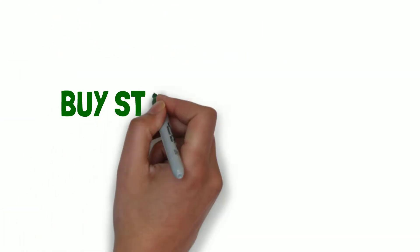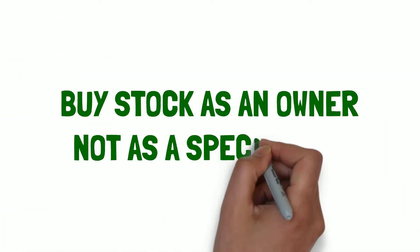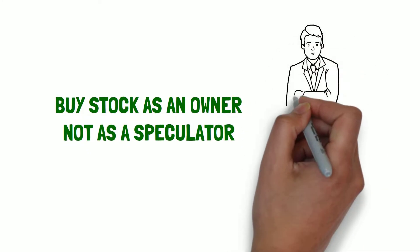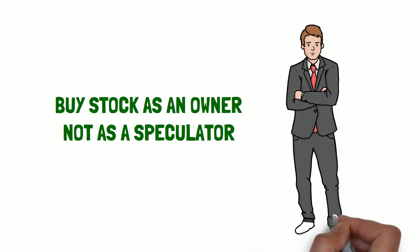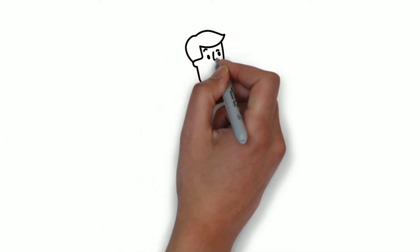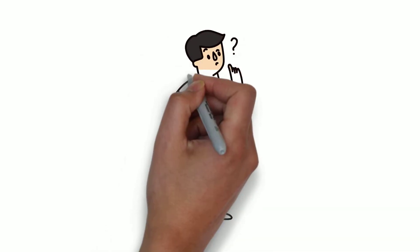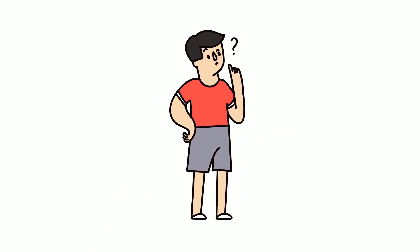The first lesson is to buy stock as an owner, not as a speculator. For Warren Buffett, owning a stock is an ownership interest in an actual business. Warren Buffett once said, whenever Charlie and I buy common stocks for Berkshire's insurance companies, we approach the transaction as if we were buying into a private business.